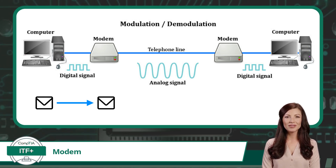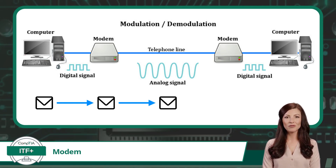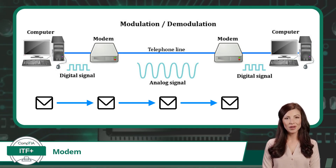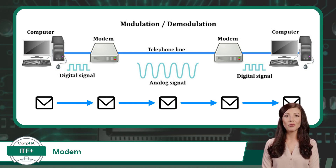Modulation is the process of taking an incoming signal — in this case a digital signal — and modifying it into another form to be transmitted, in this case an analog signal. The analog signal will then travel across an internet service provider's network until the destination network is reached. Here, another modem will perform a process called demodulation. Demodulation is the reversal of the modulation process: the incoming analog signal will be converted back to a digital signal. Now the network interface of the workstation on the far right can receive the digital signal as an input and process the newly received data packet.